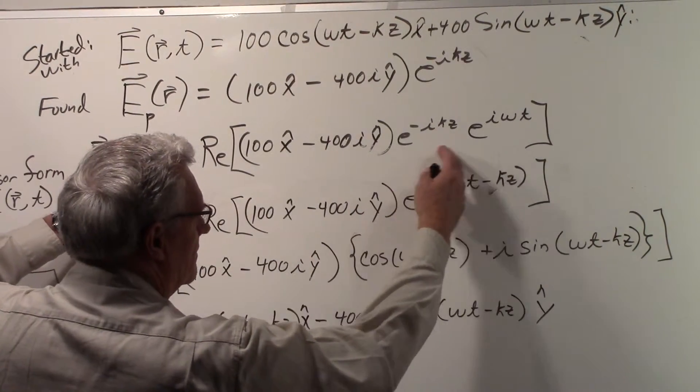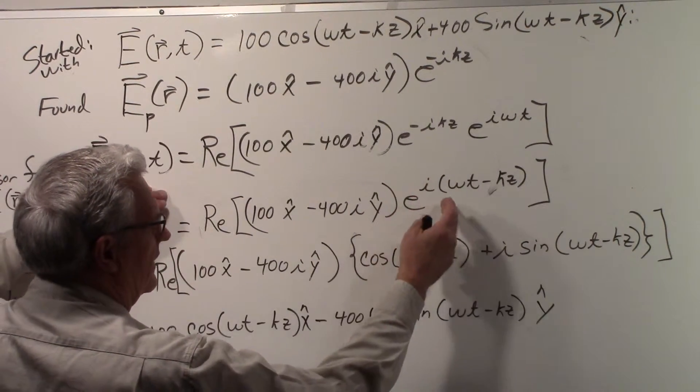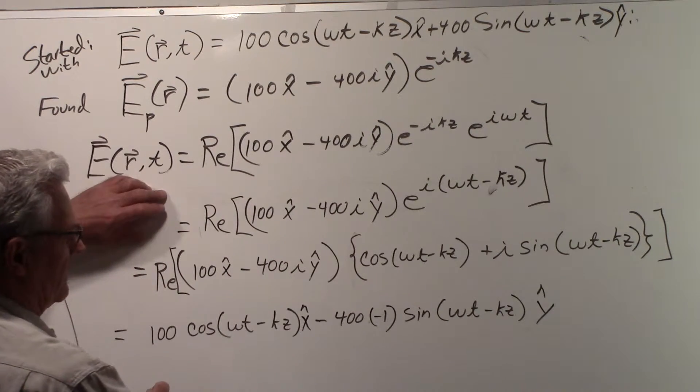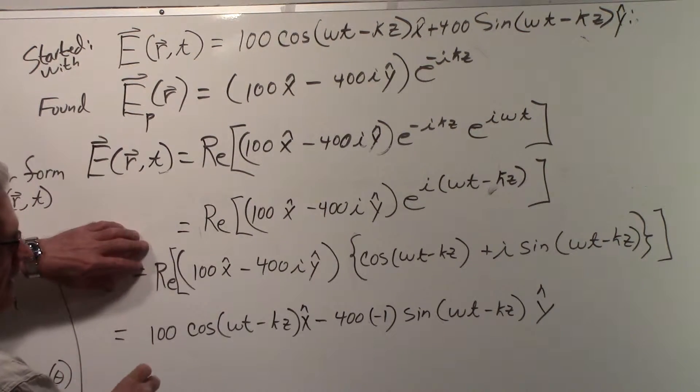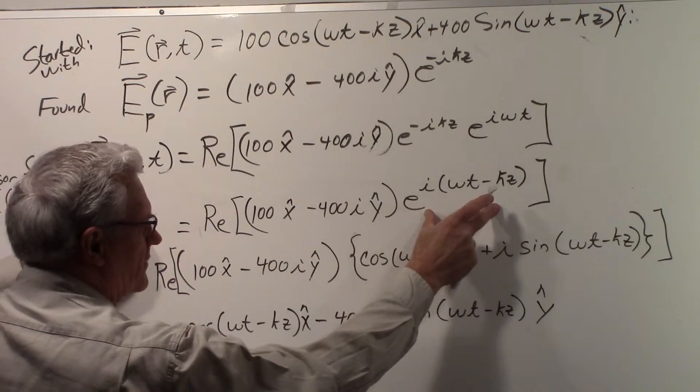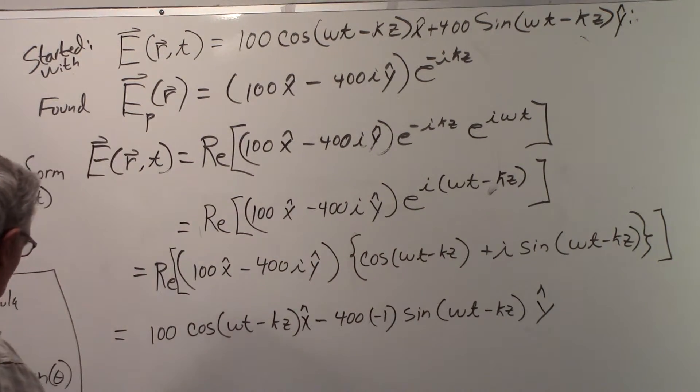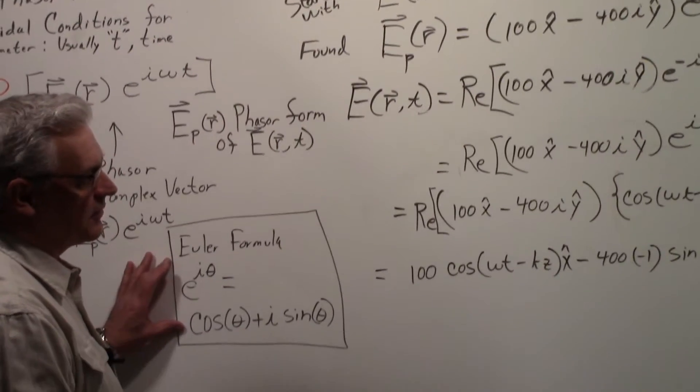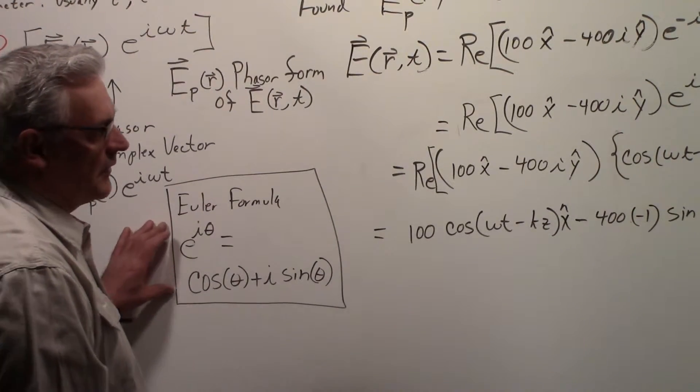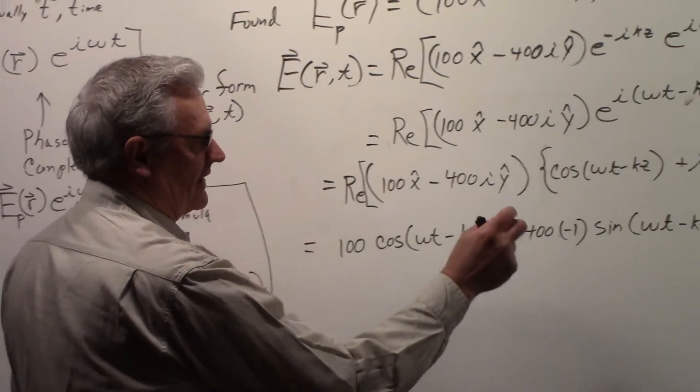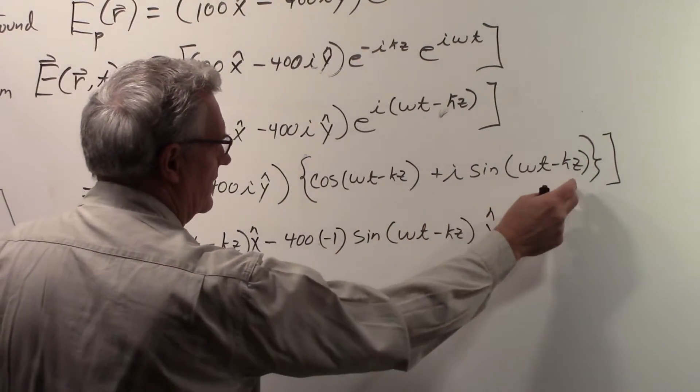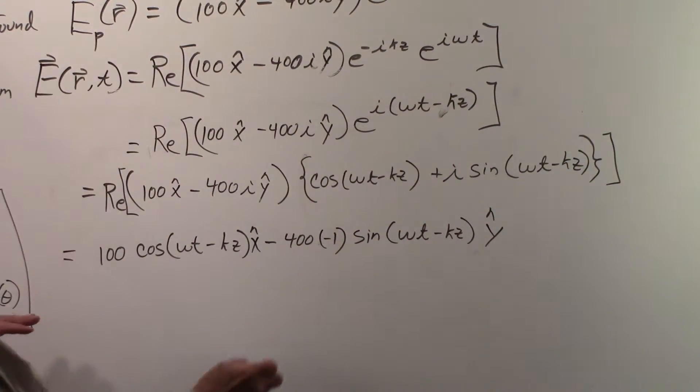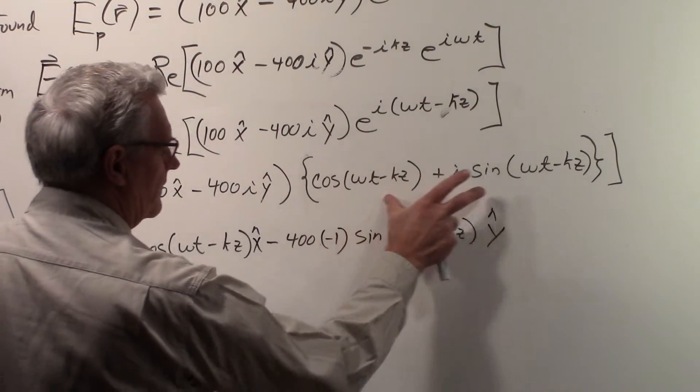We can write this product over here as e^(i(ωt - kz)) times this complex vector. We can use Euler's formula, which we have over here—which we used in Part 1—to write this as cos(ωt - kz) + i·sin(ωt - kz).